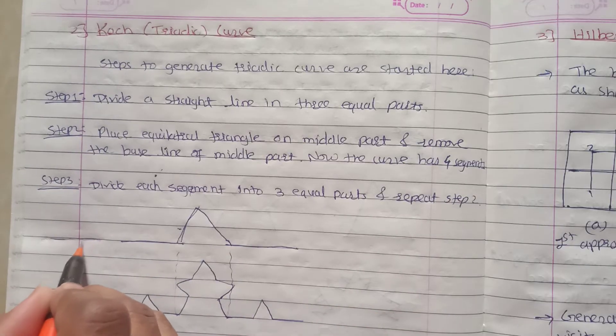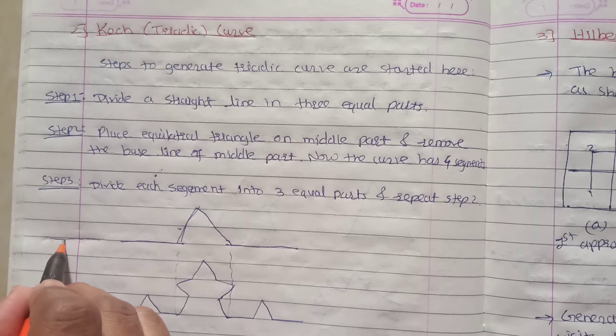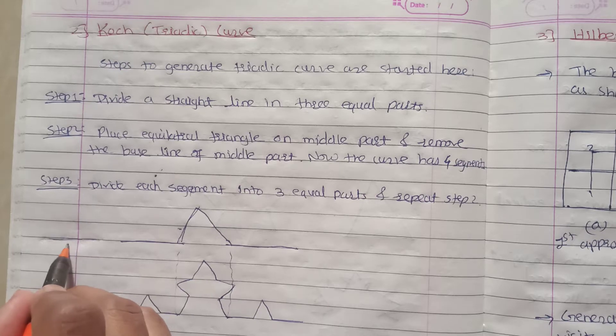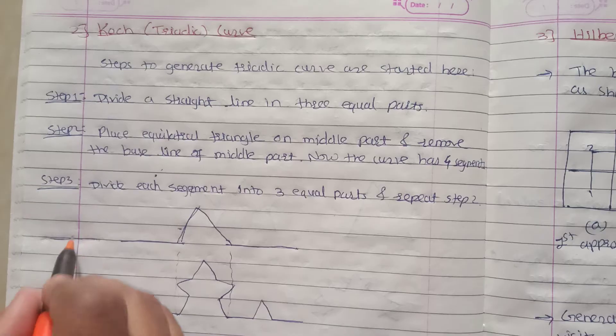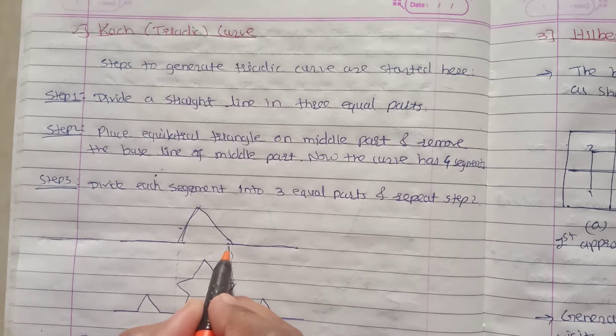So what we did is divided into three parts, and this middle part we converted into an equilateral triangle, replaced it. And this line segment in between, we removed it.